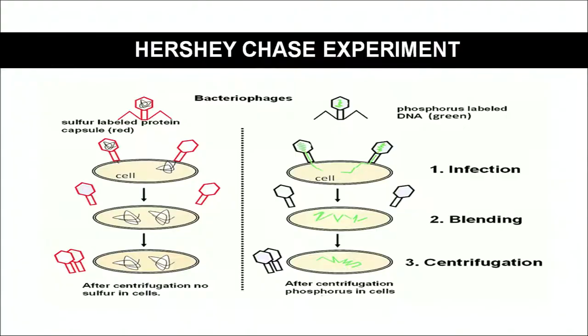When the bacterium was purified and analyzed for the presence of radioactive sulfur and phosphorus, it was found that the bacterium contained the radioactive phosphorus. This proved that DNA is the genetic material, because phosphorus is a component of DNA only.